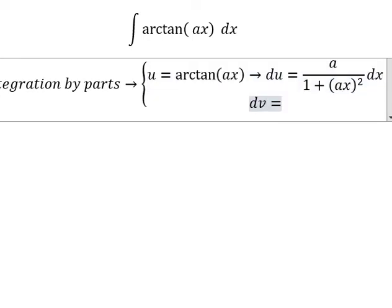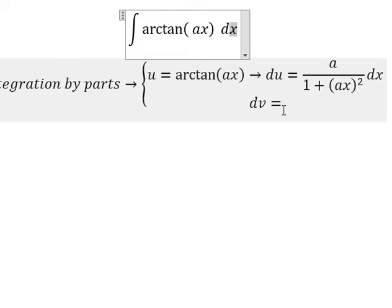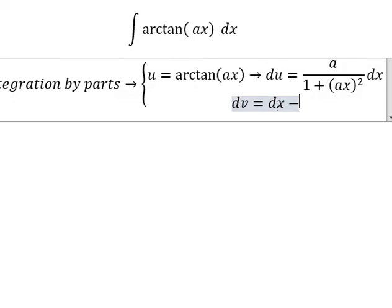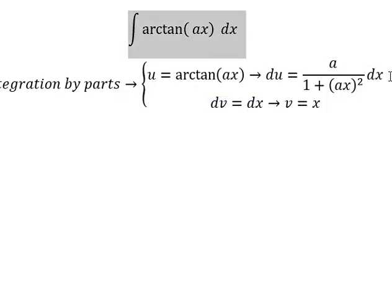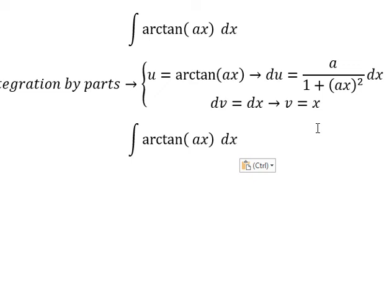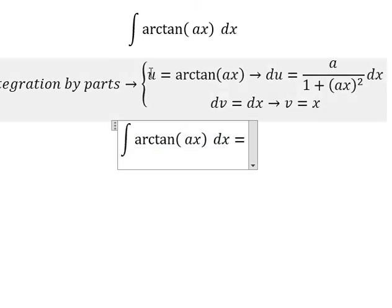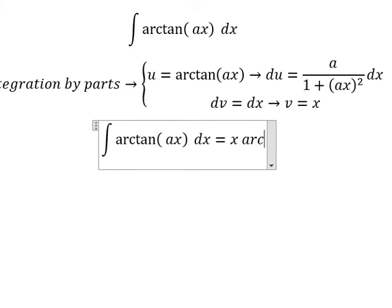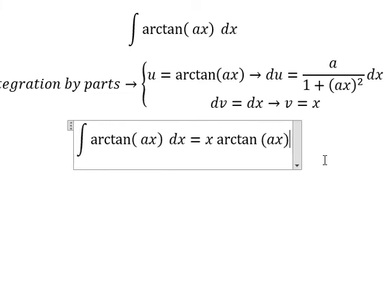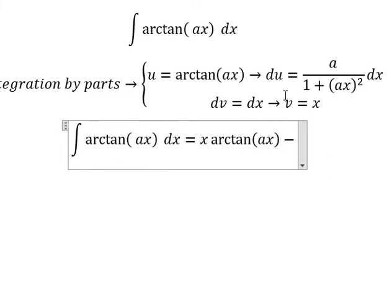dv equals dx, so we got v equals x. So we have u multiplied by v. And that's x multiplied by arctan ax minus du multiplied by v.